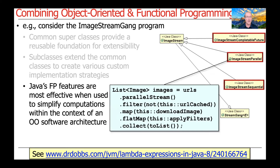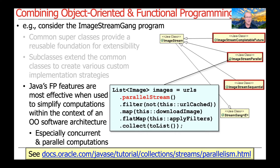In my experience, Java's functional programming features are most effective when used in the context of its object-oriented features. You can simplify computations within a well-designed, extensible, and modular object-oriented software architecture — a really great combination. This is particularly true for concurrent and parallel programs, where complexity can become very convoluted if you're not careful. Objects and functional programming paradigms work very nicely together in Java's hybrid programming model.